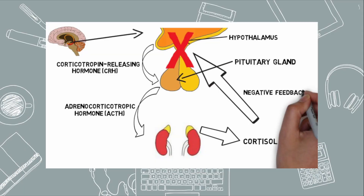The hypothalamus releases corticotropin in response to stress, which causes the anterior pituitary to release adrenocorticotropic hormone into the circulation. Adrenocorticotropic hormone then attaches to its receptor in the adrenal cortex, causing stress hormones like cortisol to be released. The hypothalamic-pituitary-adrenal, or HPA, axis is the name given to this entire system, which is responsible for adjusting fight-or-flight responses to stress.